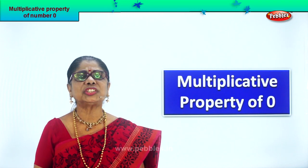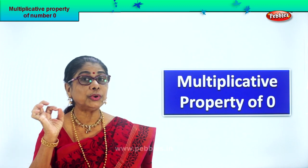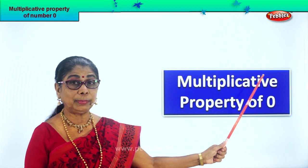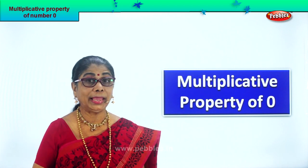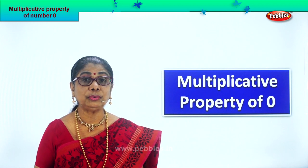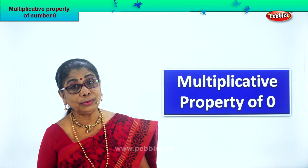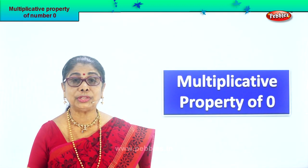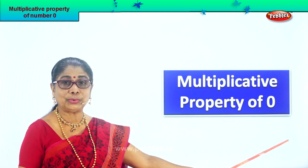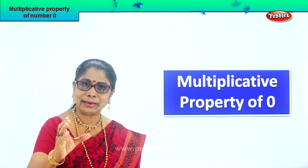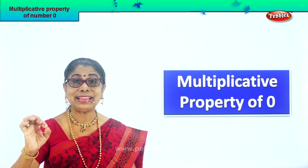Hi children, today let's look at the Multiplicative Property of Zero. What is the Multiplicative Property of Zero? Zero into any number is equal to zero itself. Any number into zero is also equal to zero — that is the Multiplicative Property of Zero. So we are going to look at that today. Listen attentively and learn; it's a very interesting exercise.